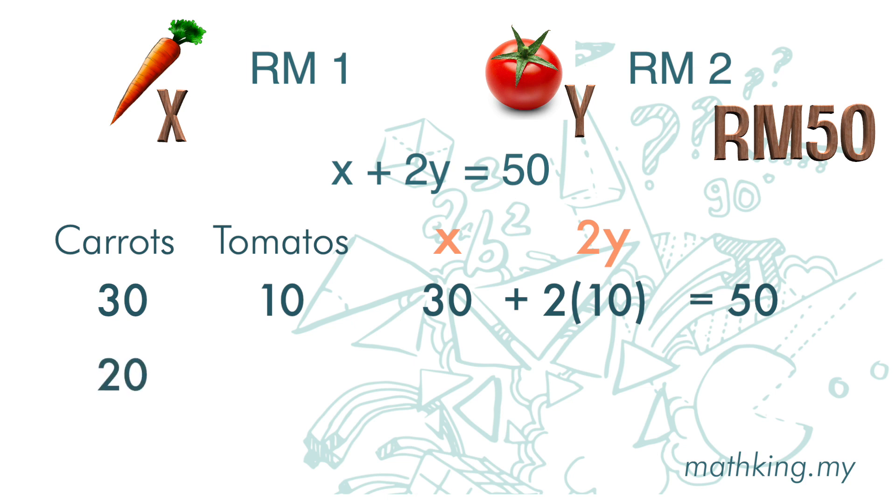If you buy 20 carrots, you can still buy 15 tomatoes. 20 carrots is 20 ringgit. For tomatoes, 2 times 15 we get 30. Total is 50.